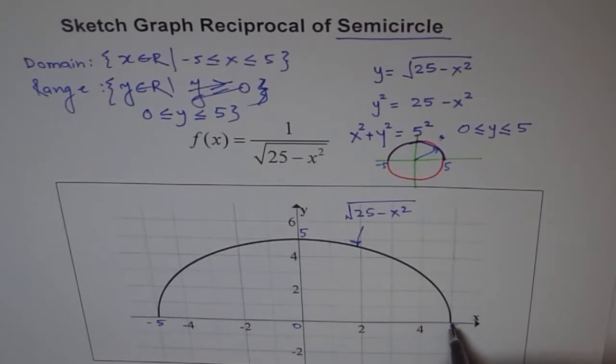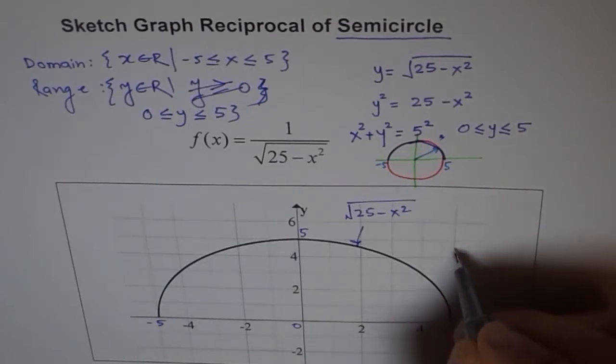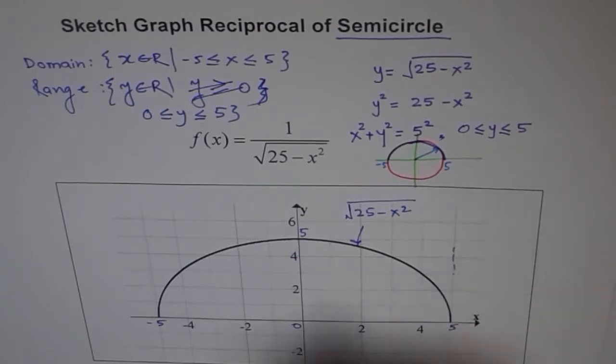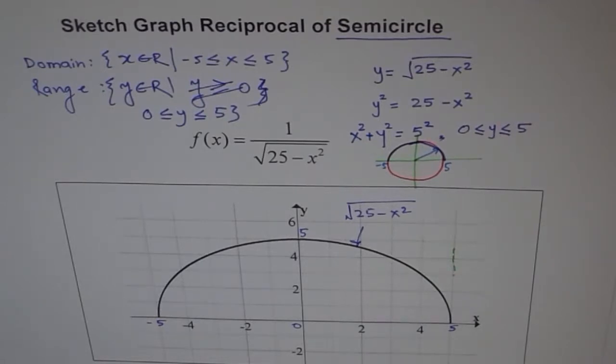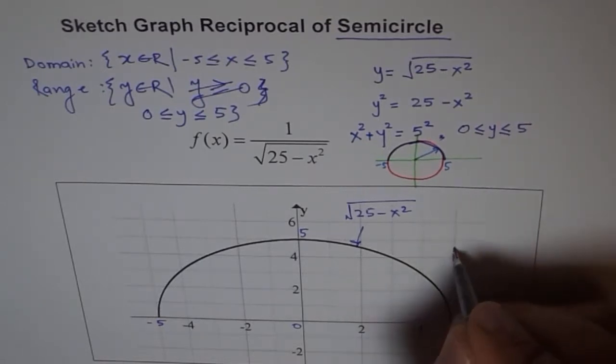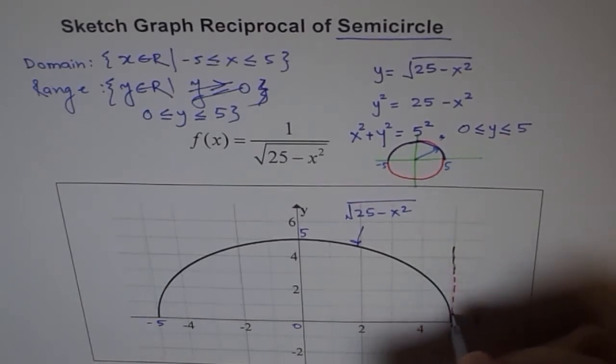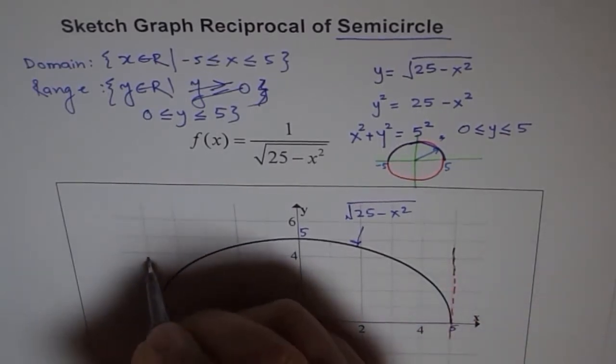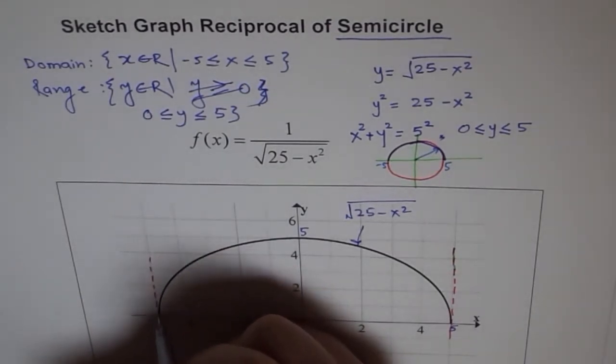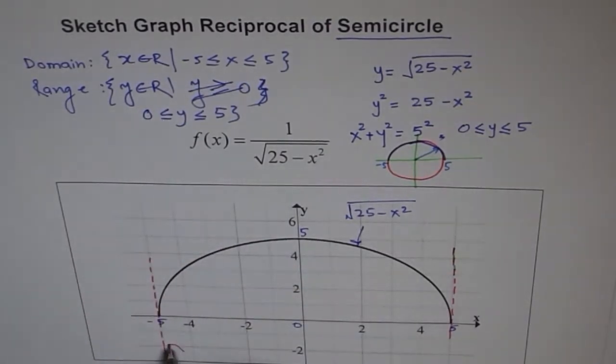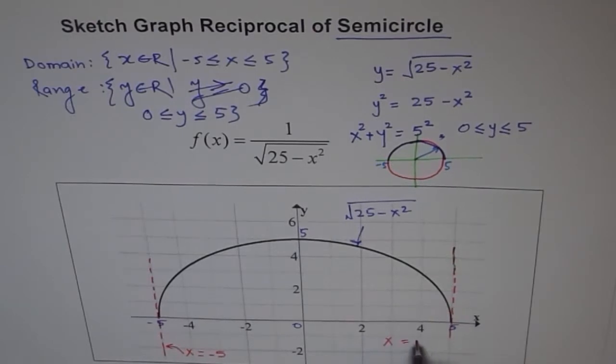As you know, at the x-intercepts, reciprocal will be 1 over 0 and 1 over 0 is not defined. So we have a vertical asymptote here. So let me put this vertical asymptote in red. So we have a vertical asymptote and the equation of the vertical asymptote is x equals to minus 5 or x equals to plus 5. So there are two vertical asymptotes here.